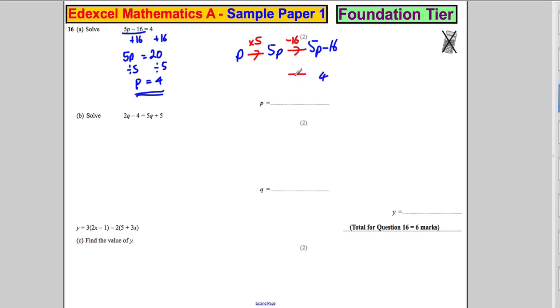So let's go backwards and undo what we've done here. We're going to add 16 to undo the takeaway 16, you get 20. And to undo times 5, you're going to divide by 5, and again, you're going to get 4. So P is 4 again.